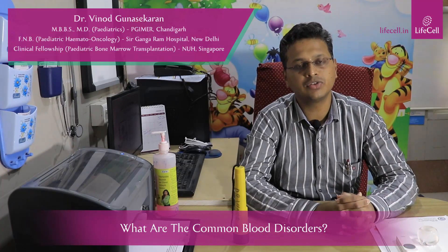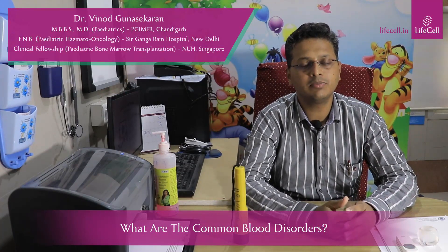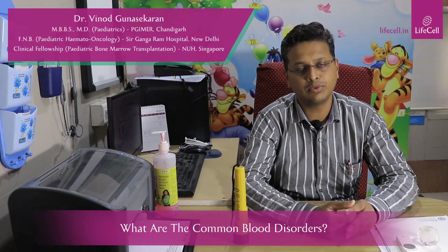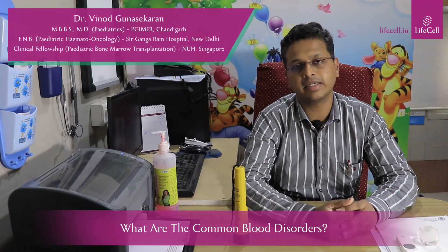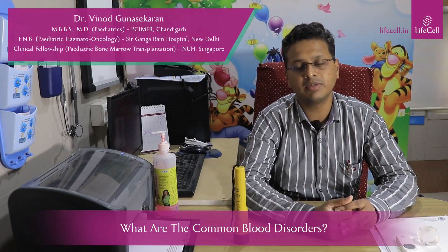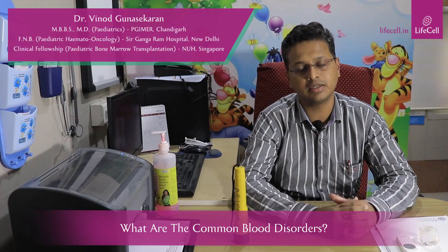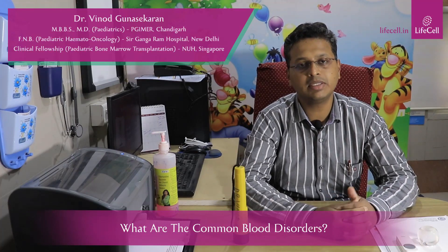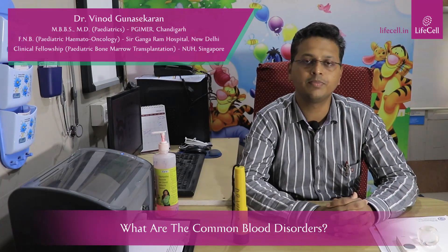What are the common blood disorders that can happen in children? Commonly they come with a drop in hemoglobin due to nutritional deficiencies like iron deficiency, vitamin and mineral deficiency, etc., which can be easily treated with nutritional supplementation.